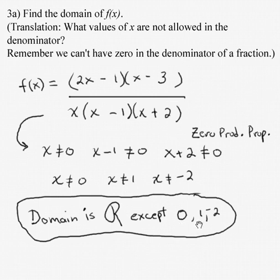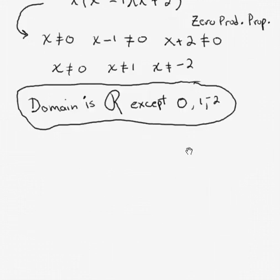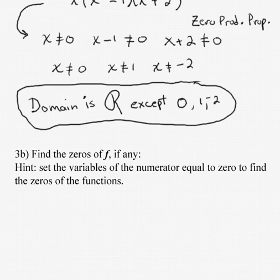x cannot be 0, x cannot equal 1, and x cannot equal negative 2. So we might want to think of those kind of as restrictions to our domain. Very important as we continue to work with rational algebraic expressions and equations as we progress through this chapter.